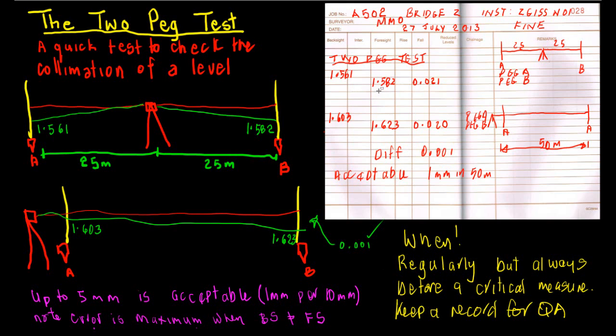It's very important because a small error here obviously could cause you to have to do more work further on. Now, the theory here is that provided you keep the backsights and foresights equal, the error will be equal at these two points and won't make any difference.